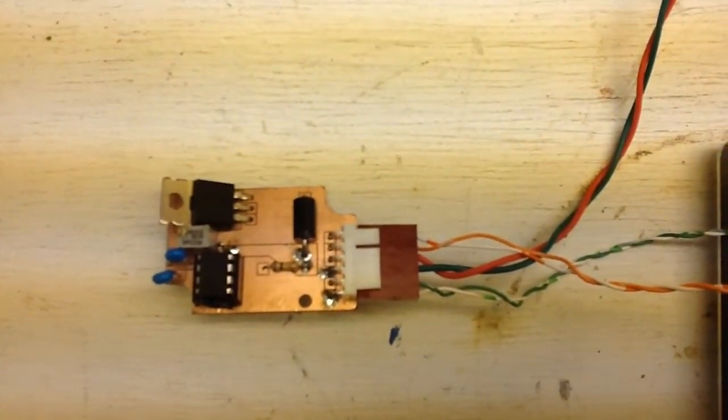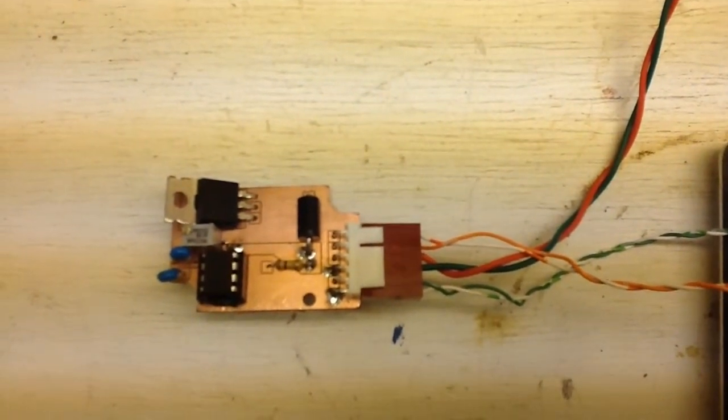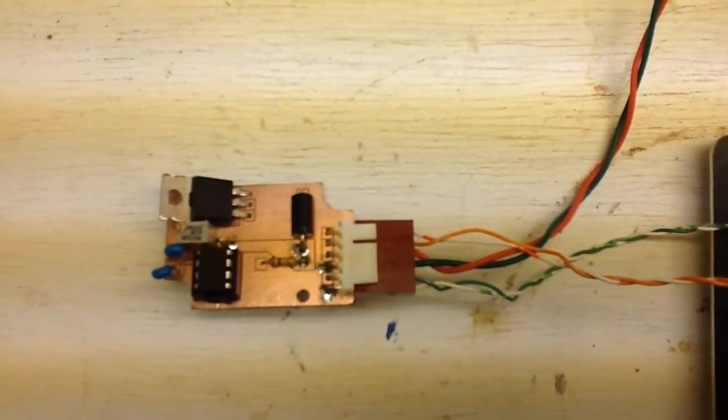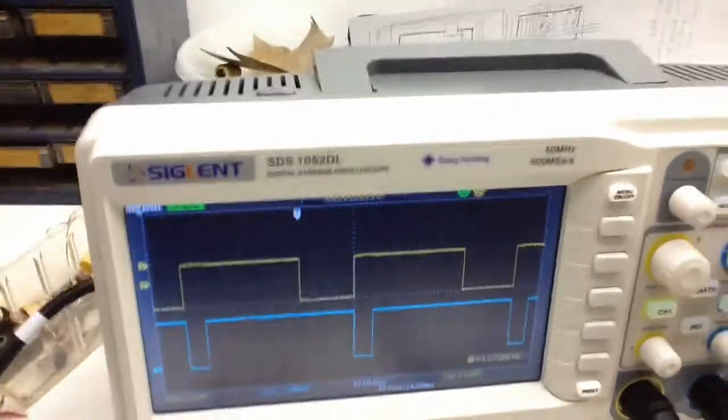When you turn off a solenoid valve, there's a current that wants to run backwards and can damage the circuit. So that's what the diode is for. So let's see if I can show you how it works.